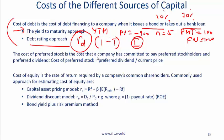The cost of preferred stock is the cost that a company has committed to pay preferred shareholders as preferred dividends. The formula is: the cost of preferred stock equals the annual dividend agreed upon divided by the current stock price — not the par value, not the old stock price, the current stock price.